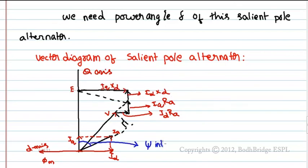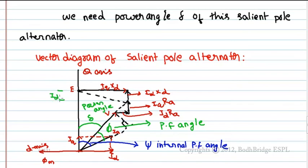Psi is the internal power factor angle, phi is the power factor angle, and delta is the power angle. Here is Id Xq and Iq Ra. This is V cos delta. This whole term equals E. From this vector diagram: